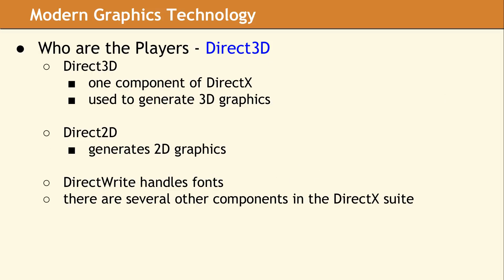DirectX refers to a group of related APIs which handle video, graphics, and multimedia. The X is simply a placeholder for any given API. Direct3D is one of the components of DirectX, and it covers 3D graphics. The DirectX libraries were created to address a performance problem when Microsoft moved to Windows 95. Prior to this, most games were written to run in DOS where drivers were not required — developers accessed the hardware directly. Windows 95 added a protected memory model, which limited direct hardware access. DirectX was added very late in the development process for Windows 95, as a quick fix to address concerns that games written for DOS had better graphics and performance.